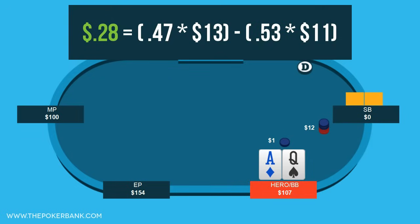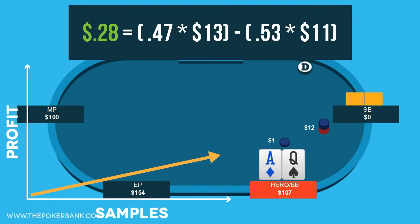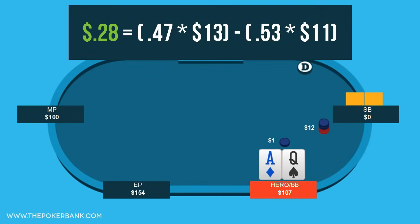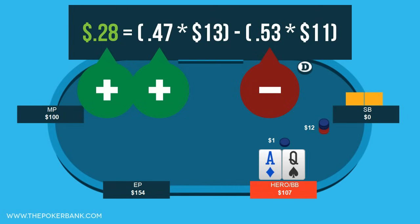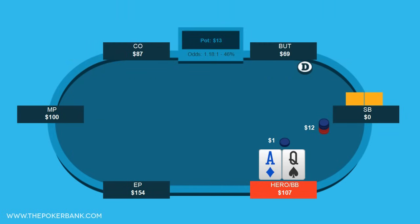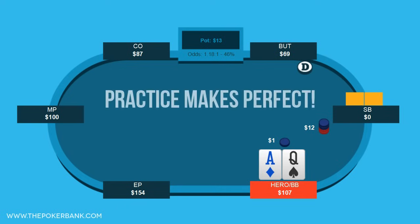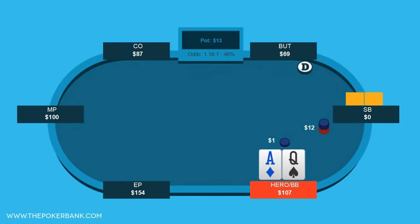While 28 cents may not seem like a lot, if we consistently call here we will net a significant amount of profit in the long run. It should also go without saying that if the small blind shoves a wider range, our equity goes up, our win percentage goes up, our loss percentage goes down, and we actually make more EV the wider the small blind shoves. The more you practice and calculate EV in both common and tricky spots, the easier this becomes.